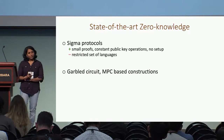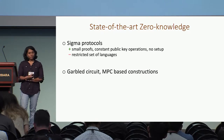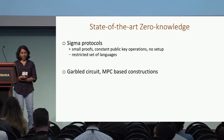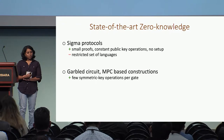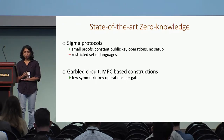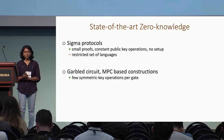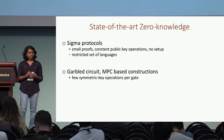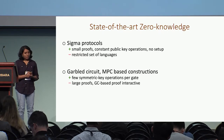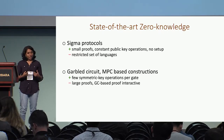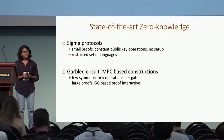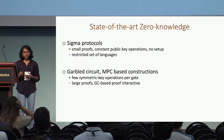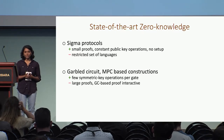Then there are approaches based on garbled circuits and MPC in the head. This line of work is very efficient for the prover, requiring only a few symmetric key operations per gate in the circuit. But unfortunately, they lead to large proofs, and the system based on garbled circuits also leads to a proof system that is interactive.